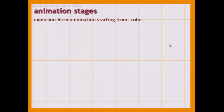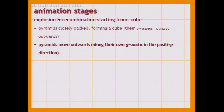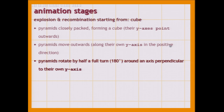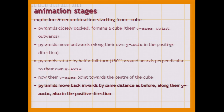Now let's see what are the animation stages for exploding the cube and recombining it. First we have the pyramids closely packed so they form a cube, and their Y axis points outwards. Then the pyramids move outwards along their own Y axis in the positive direction. Then the pyramids rotate by half a full turn around an axis perpendicular to their own Y axis — can be the X axis or the Z axis, any axis in that plane. Now their Y axis points towards the center of the cube after we've rotated them by 180 degrees. And now we move them back inwards by the same distance along their Y axis, also in the positive direction, because as I've said their Y axis now points inwards.